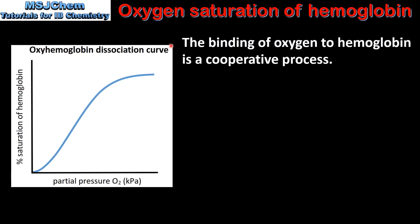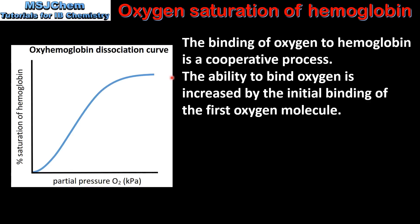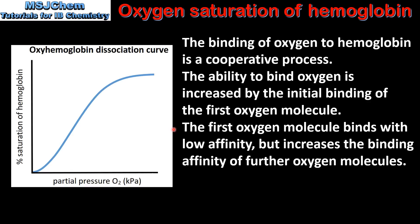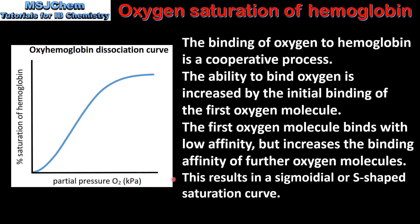The binding of oxygen to haemoglobin is a cooperative process. This means the ability to bind oxygen is increased by the initial binding of the first oxygen molecule. The first oxygen molecule binds with low affinity but increases the binding affinity of further oxygen molecules. This results in a sigmoidal or S-shaped saturation curve.